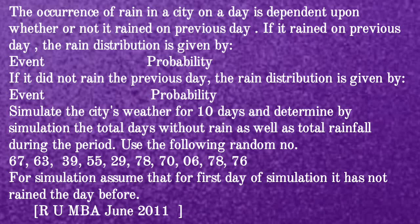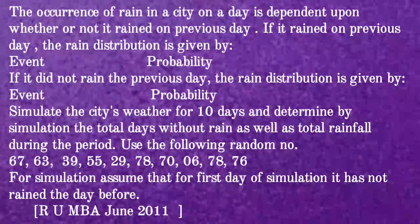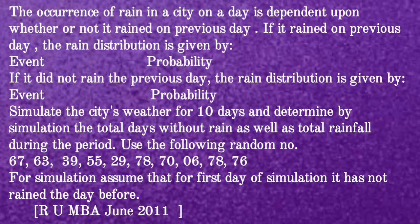Use the following random numbers: 67, 63, 39, 59, 29, 78, 76, 78, 76. For simulation, assume that for the first day of simulation it had not rained the day before.